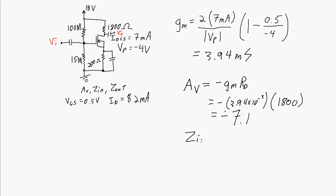The input impedance is simply the parallel combination of those two resistors, 100 megaohms in parallel with 15 megaohms, which works out to 13 megaohms. The output impedance, if we don't include the RD value, is going to work out to 1800 ohms.